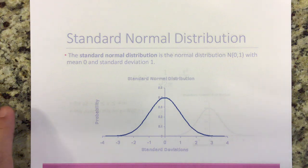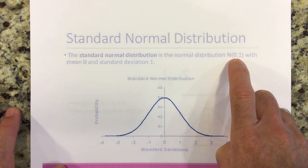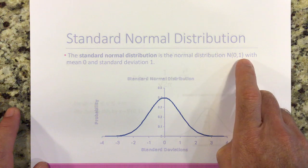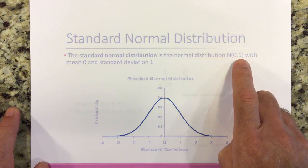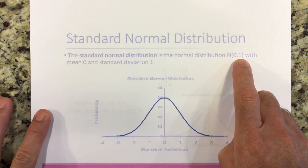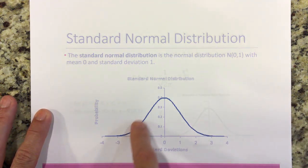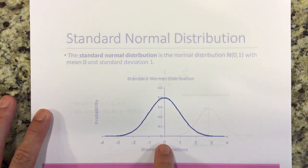Once we do that, we've created the standard normal distribution. It is a normal distribution with a mean of zero — because landing right on the mean means you're zero standard deviations from it — and a standard deviation of one, because it measures how many standard deviations you are from the mean. It has the same shape, but the center is at zero. Any positive value means you're above the mean; any negative value means you're below.